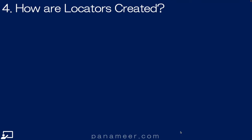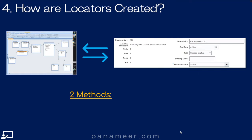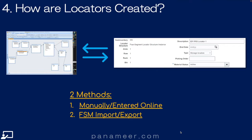Slide 4: How are they created? Locators are created in one of two following methods. First, they can be manually entered, which is time-consuming. So second, they can be electronically imported via a program called Business Objects — the Import-Export in Functional Setup Manager, or FSM. Typically, the original import of the structure of inventory, because it's usually very large, is imported and then certain things may be tweaked or manually entered and changed online.